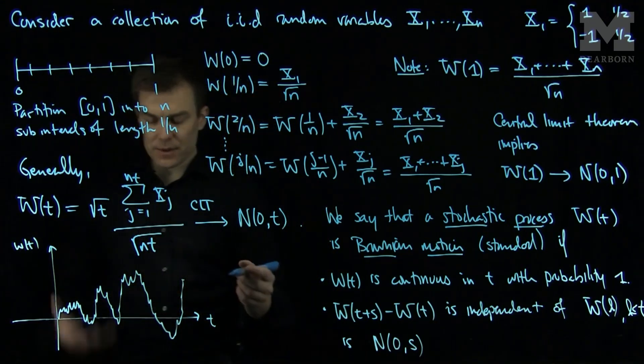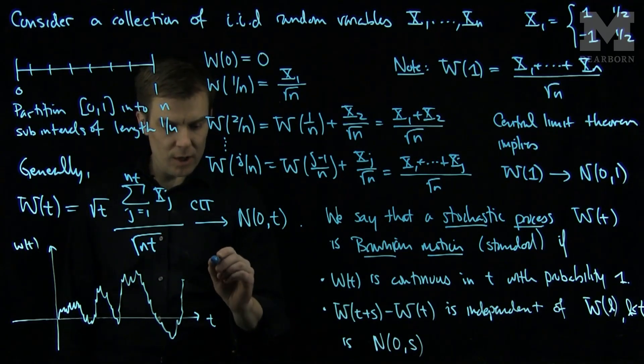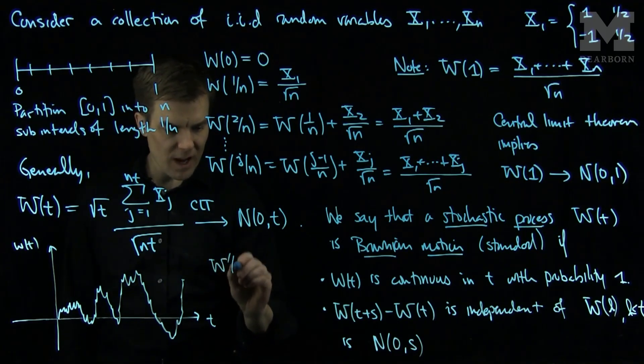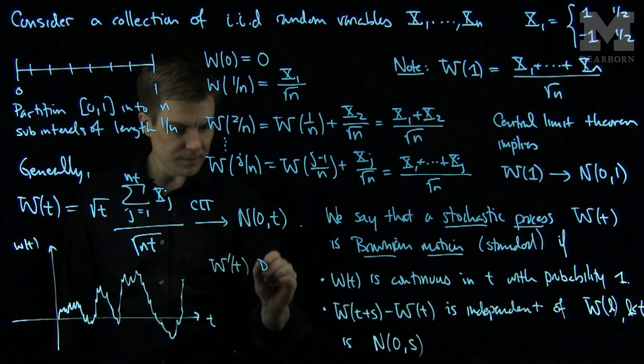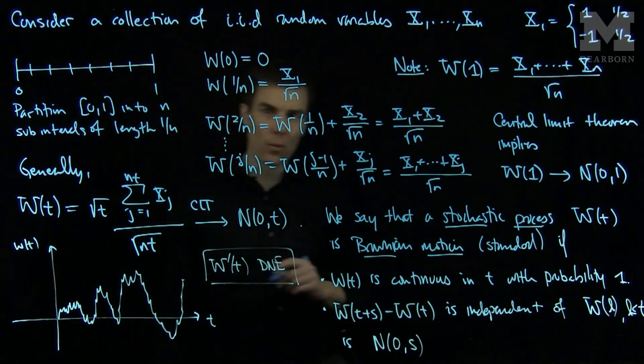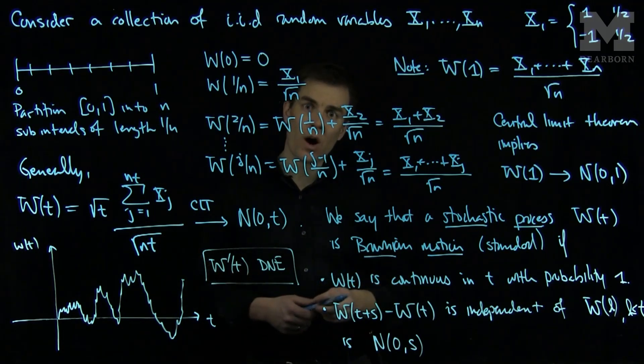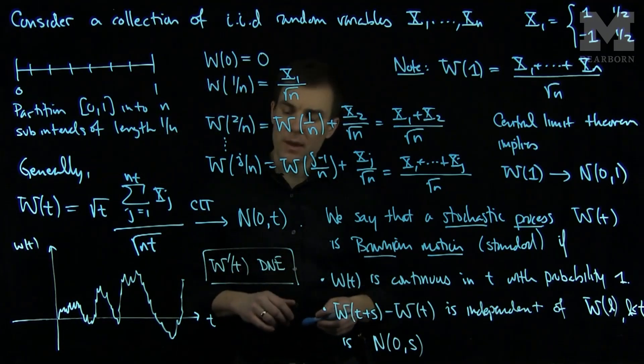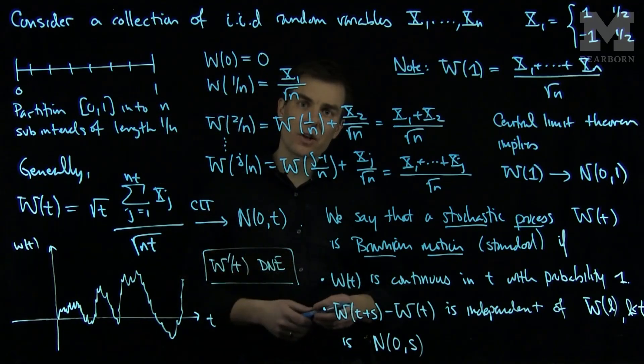We can also note that from this interpretation of Brownian motion, wt prime does not exist at any point. And this is a salient feature of Brownian motion, is that while it's a rescaled version of a random walk with the appropriate scaling, we see that it will not be differentiable classically, yet the paths will be continuous.